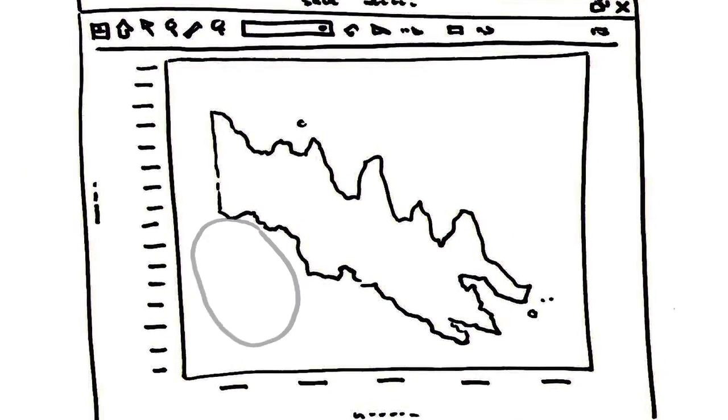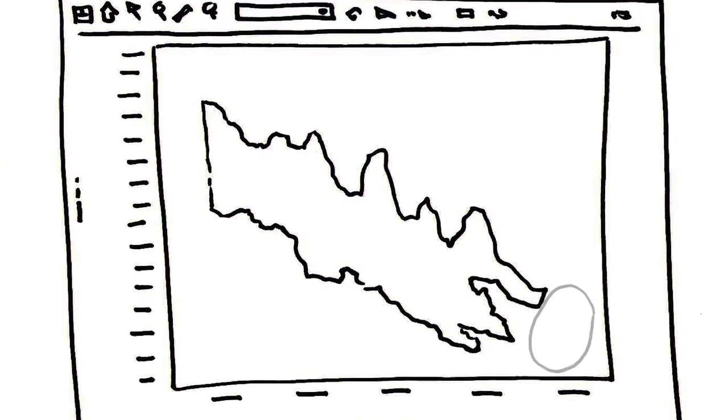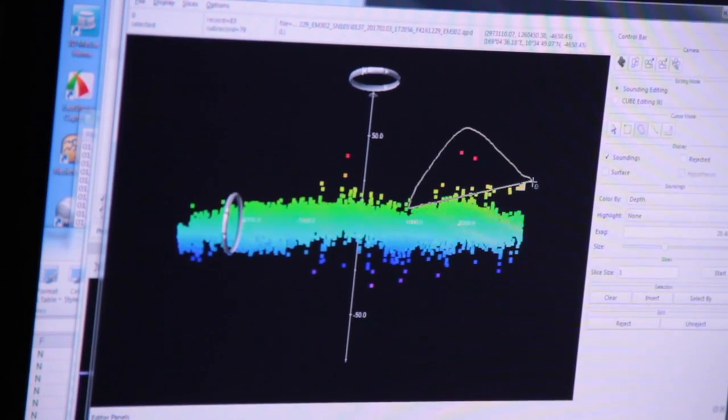We flag any outliers from the data sets. In the end we'll have a three-dimensional image of the ocean floor.